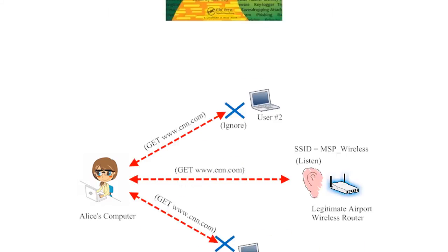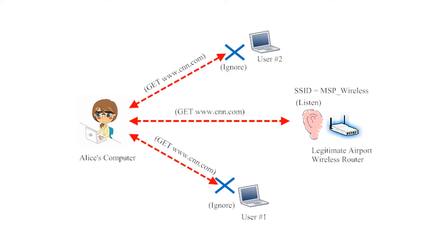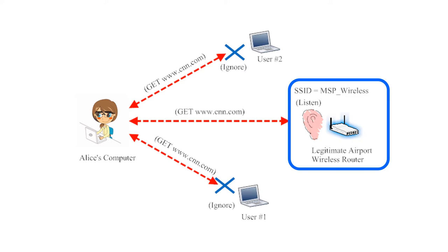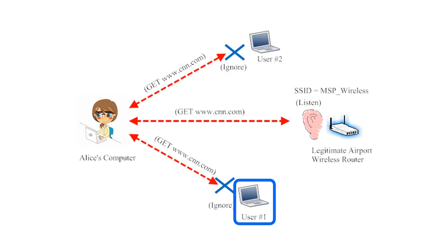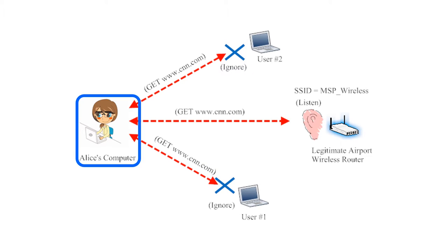This illustration shows how computers normally function on a network — that is, when they're not sniffing traffic. On the right side of the page, we have a wireless router named MSP Wireless. We also have three computers connected to this wireless network: User 1, User 2, and Alice's computer. The red dotted line represents Alice's computer sending a packet of information to the router, requesting the homepage for CNN.com. Normally, this information goes out in all directions and is readable by every device on the network, but computers are normally configured to ignore this kind of information.